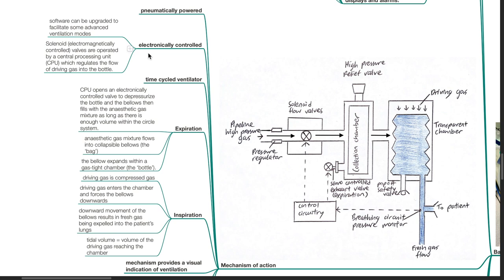Mechanism of action: it is pneumatically powered, electronically controlled and time-cycled. Software can be upgraded to facilitate advanced ventilation modes. Solenoids, or electromagnetically controlled valves, are operated by a central processing unit which regulates the flow of driving gas into the bottle. During expiration, the CPU opens an electronically controlled valve to depressurize the bottle, and the bellows can fill with the anesthetic gas mixture as long as there is enough volume within the circle system.